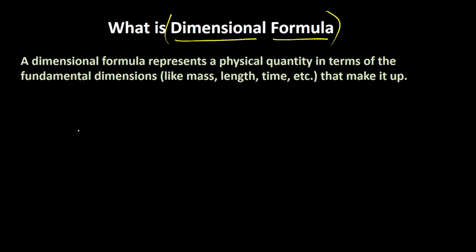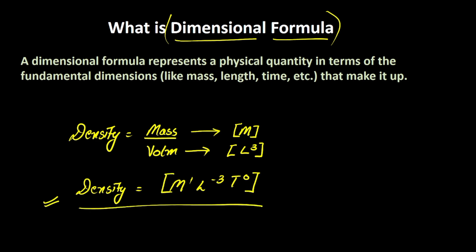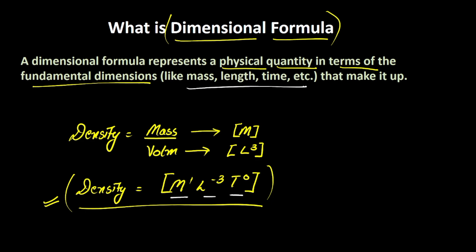For example, you must be familiar that density is equal to mass per unit volume. Mass can be written as M, so the dimension of mass is M. The dimensional formula for volume can be written as L³. So the dimensional formula for density in terms of MLT would be M raised to the power 1, L raised to the power negative 3, and T raised to the power 0. This is what we call the dimensional formula of density. A dimensional formula represents a physical quantity in terms of fundamental quantities like mass, length, and time — these are the fundamental physical quantities.